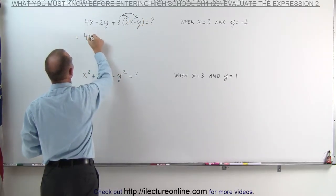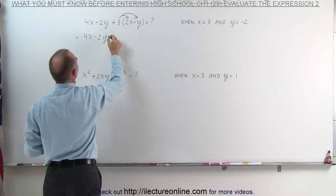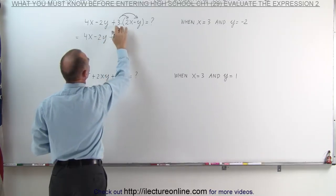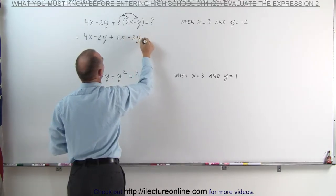This then becomes 4x minus 2y plus 3 times 2x which is plus 6x and plus 3 times a negative y which is minus 3y.